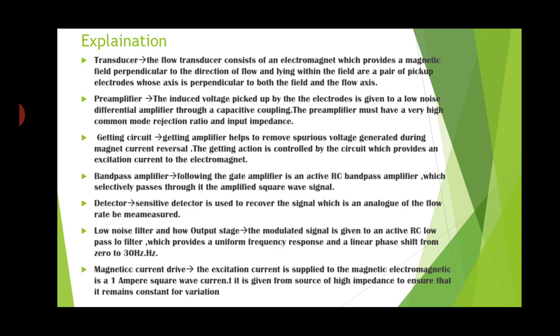The modulated signal is given to an active RC low pass filter which provides a uniform frequency response and linear phase shift from 0 to 30 Hz. The excitation current supplied to the electromagnetic circuit is a 1-ampere square wave current, given from a high impedance source to ensure it remains constant for variations.